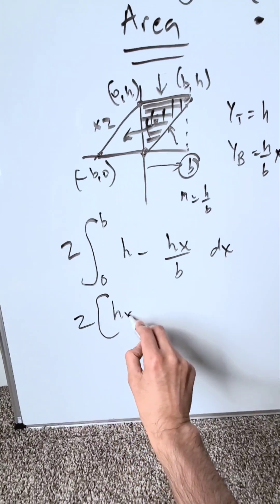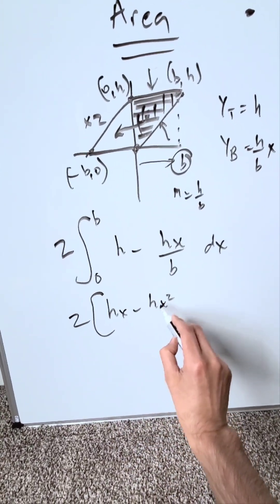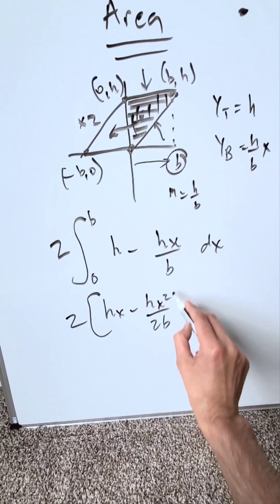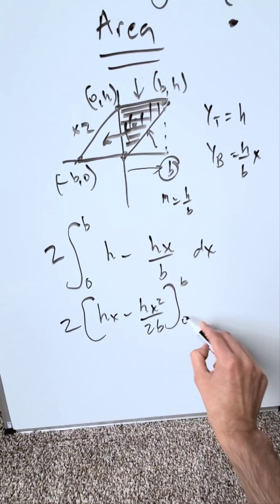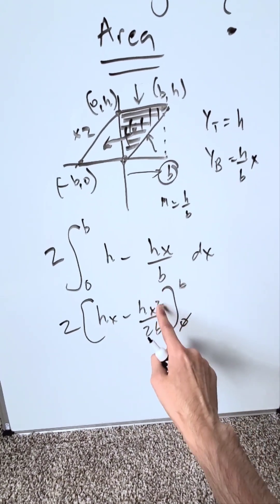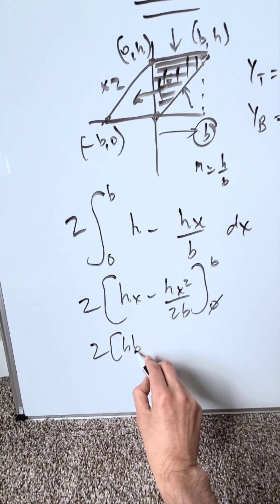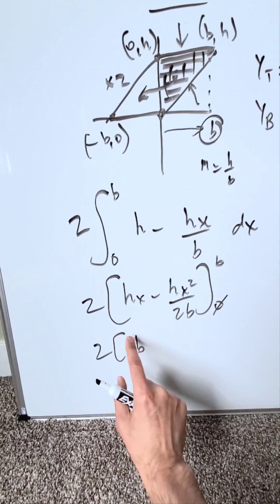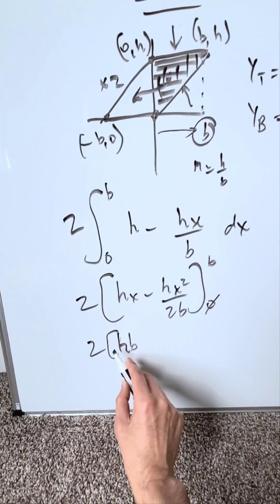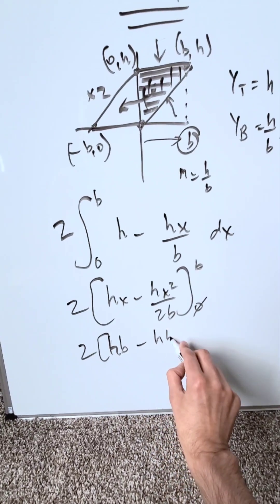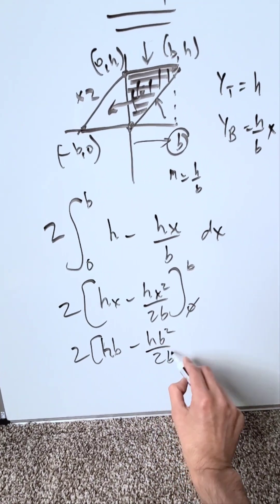When you do your antiderivative you have hx minus hx²/2b, with upper limit b and lower limit 0. The lower limit is meaningless. Let's put b in place of x. I have 2(hb - hb²/2b).